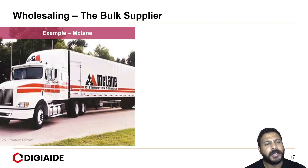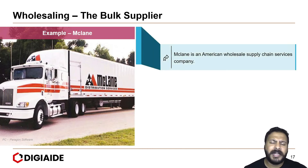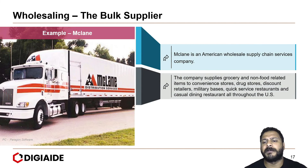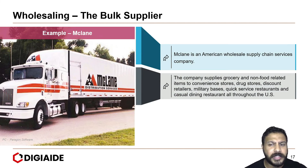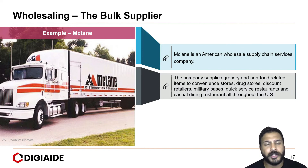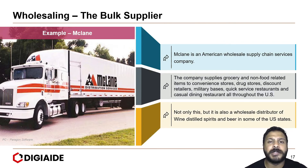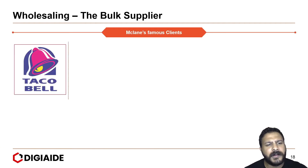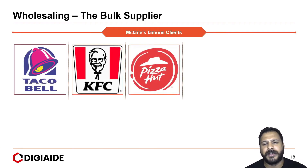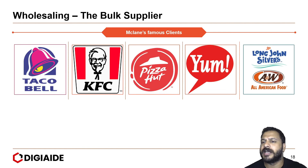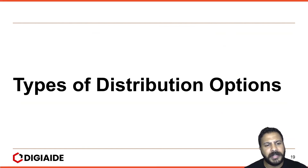Moving on to an example of a wholesaler: McLean. McLean is an American wholesale supply chain services company. The company supplies grocery and non-food related items to convenience stores, drugstores, discount stores, military bases, quick-service restaurants, and casual dining restaurants all throughout the US. It is also a wholesale distributor of wine, distilled spirits, and beer in some US states. Their key clients include Taco Bell, KFC, Pizza Hut, Yum Brands, and Long John Silver's.